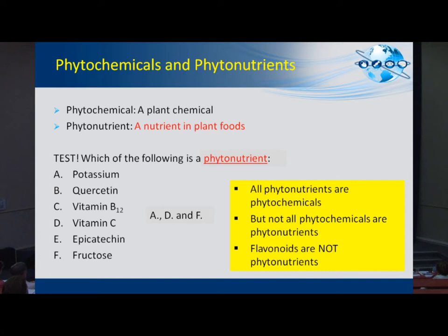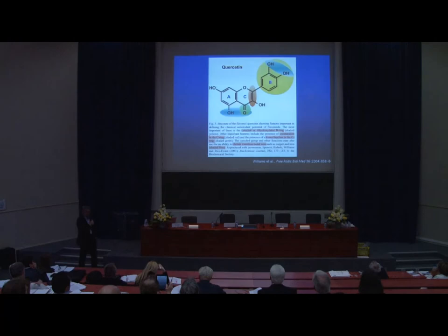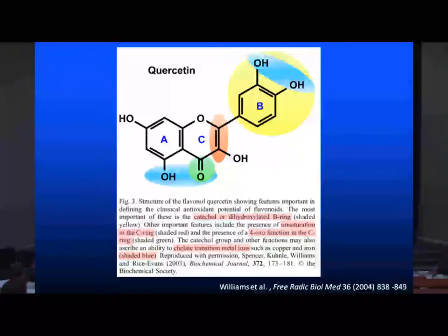Please don't call a flavonoid a phytonutrient — it's not. It's just a phytochemical. It doesn't have a known function as a nutrient or a known function in biology. It is a xenobiotic, and flavonoids induce phase 2 enzyme metabolism, as we've heard. They are very differently metabolized compared to vitamins, which are not phytochemicals and not xenobiotics.